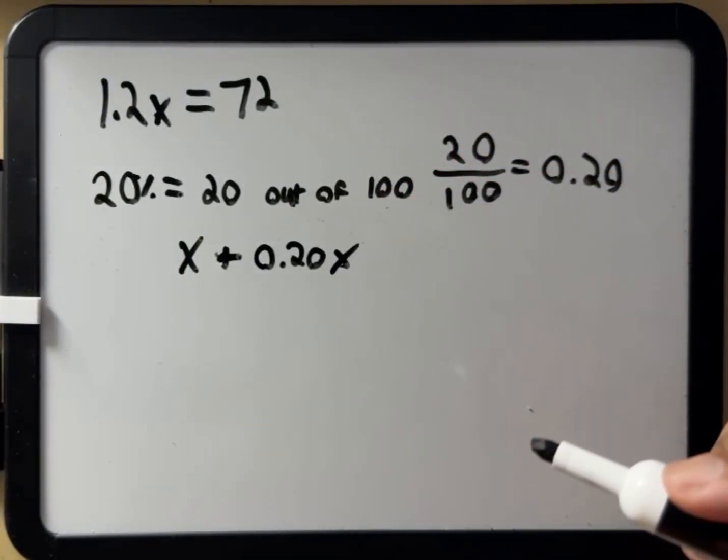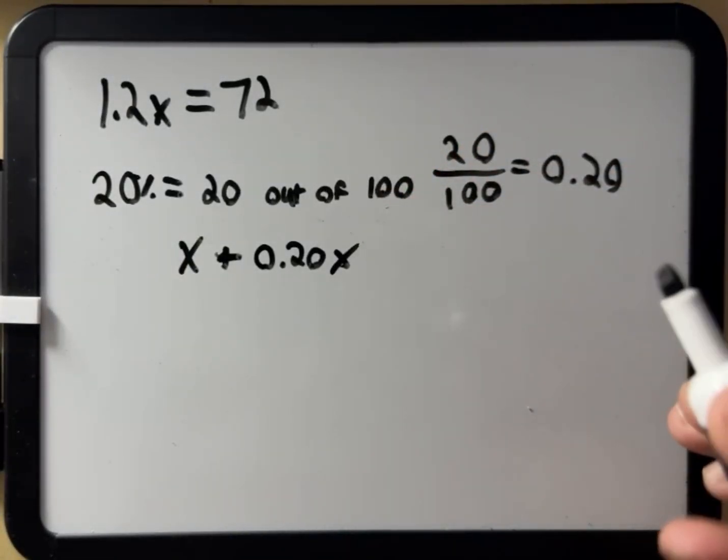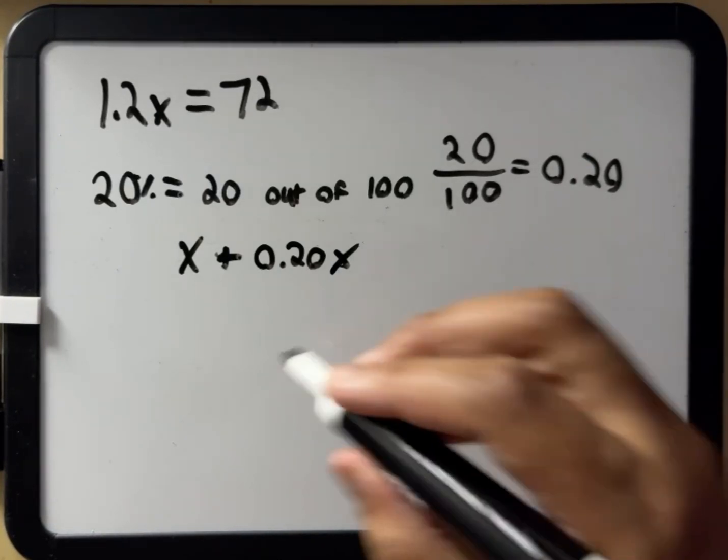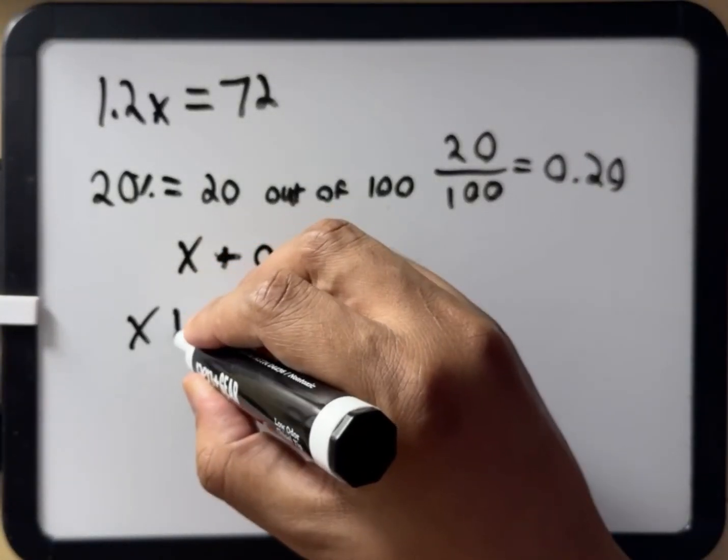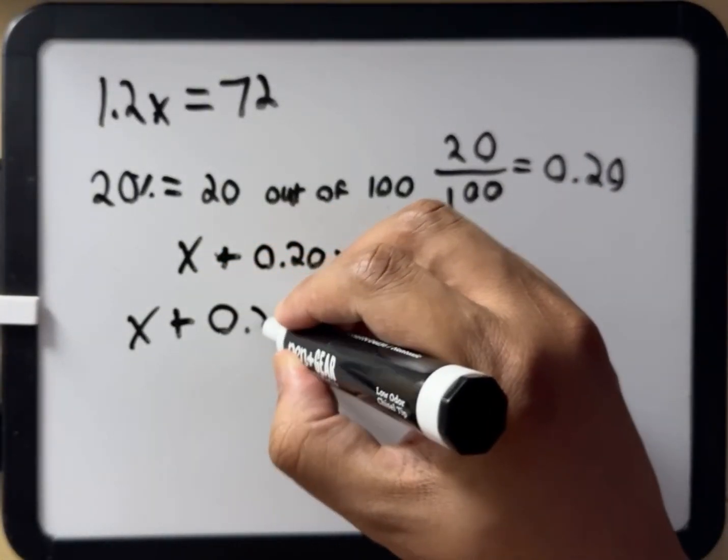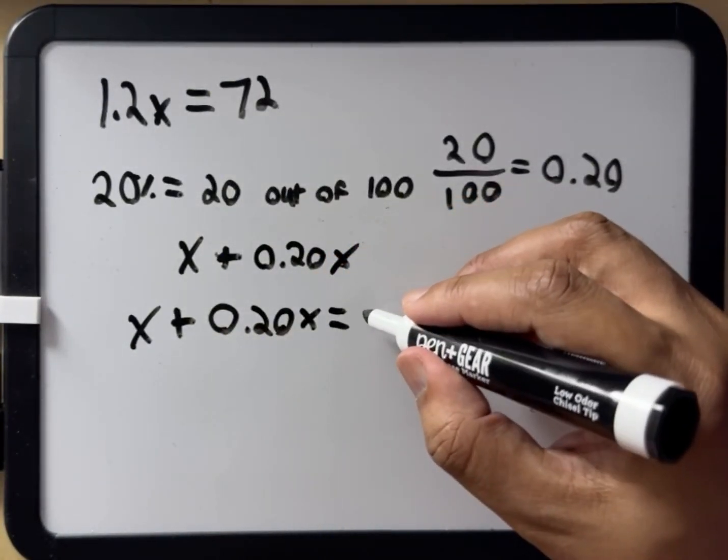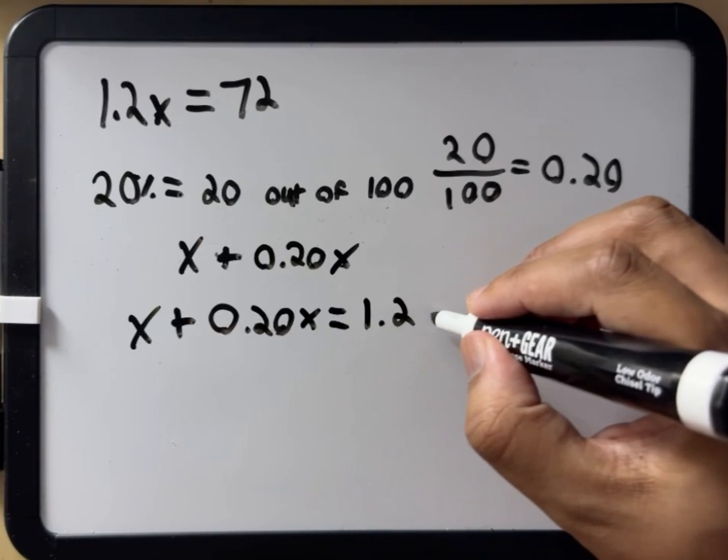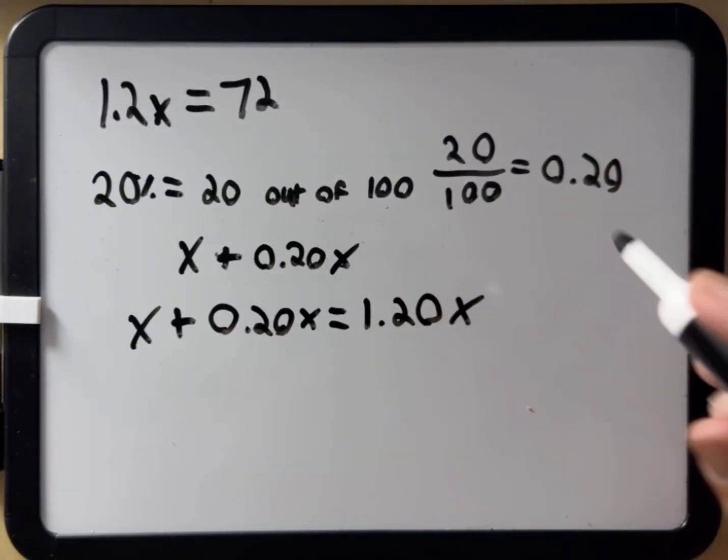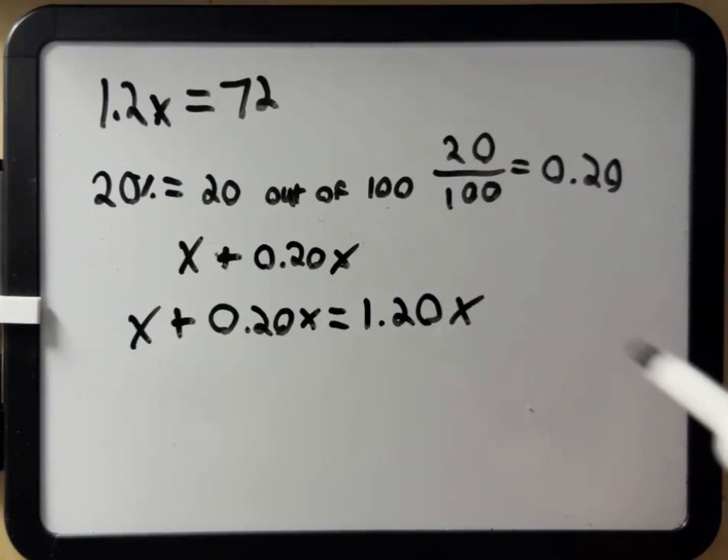Think of it like this. You have one whole x and you're adding 0.20x. So now you have x plus 0.20x, which equals 1.20x. Okay, so that's how we got 1.20.